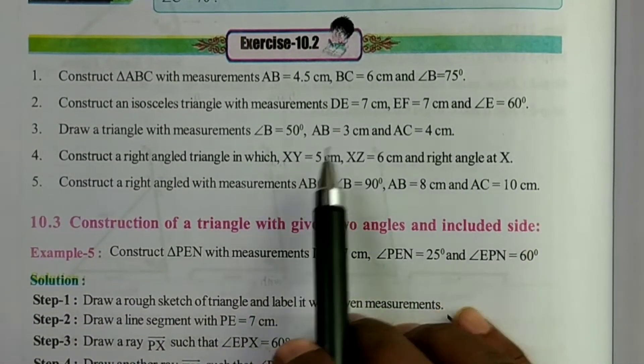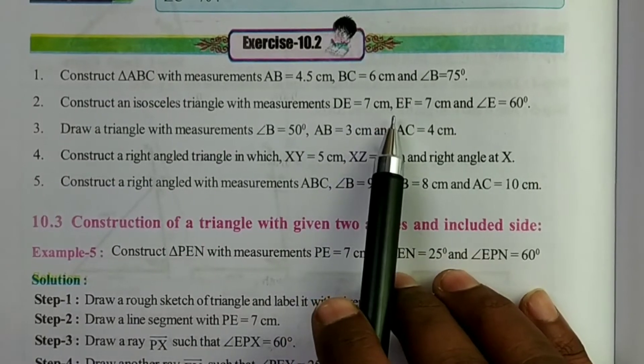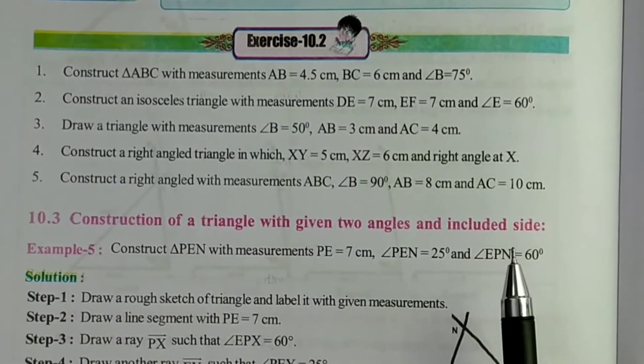So this is an isosceles triangle. Already two measurements are same, so this is also an easy construction.